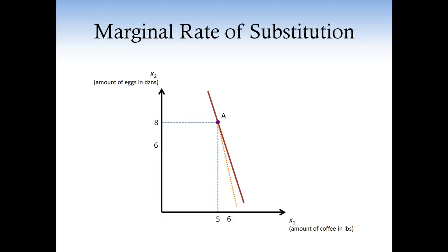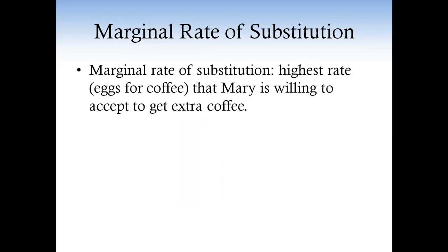You're absolutely right. In fact, the maximum rate at which Mary is willing to trade is three — that is the marginal rate of substitution. The marginal rate of substitution can be interpreted as the maximum rate that Mary is willing to accept as a trade to get coffee. In other words, the marginal rate of substitution is the maximum number of eggs that Mary is willing to give up for an extra unit of coffee.